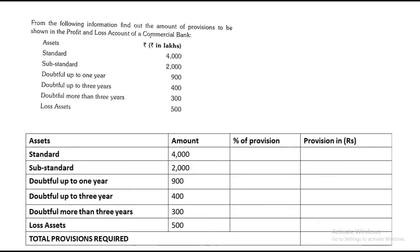From the following information, find out the amount of provision to be shown in the P&L account of a commercial bank. The assets and amounts have been given. There are: standard, substandard, doubtful, doubtful, doubtful, and loss. In the solution, the assets are listed as: standard, substandard, doubtful for one year, doubtful for three years, doubtful for more than three years, and loss asset. The amounts are 4,000; 2,000; 900; 400; 300; and 500 (all in lakhs).